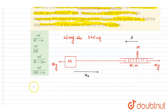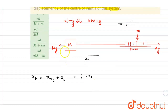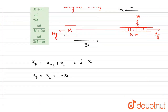The displacement of the man with respect to the ground equals the displacement of the man with respect to the ladder plus the displacement of the ladder. Taking the man's direction as positive, this gives l minus x₀. The ladder and block both move by x₀, so the displacement of the ladder is minus x₀.